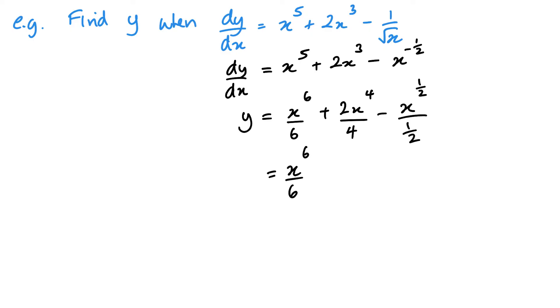So, x to the power of 6 over 6 can stay as it is. 2 x to the power of 4 over 4, so this is going to become x to the power of 4 over 2. And then we've got x to the power of 1 half divided by 1 half, so it's going to become 2. And I'm going to put that as a root x. Now, I should always remember that plus c. And I should go back and make sure I just put that plus c on the first line we did the integration on as well.